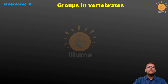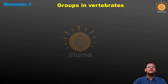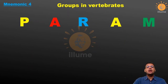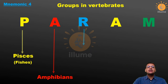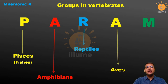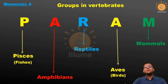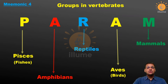The next mnemonic helps remember the groups within Vertebrata. In the phylum Chordata, there is a subgroup called Vertebrata, which has five groups. To remember their names, just remember 'PARAM', an Indian name meaning 'super'. P stands for Pisces, the group of fishes. A stands for Amphibians. R stands for Reptiles. A stands for Aves, or birds. M stands for Mammals. We often get confused among the different groups of vertebrates, so just remember PARAM: Pisces, Amphibians, Reptiles, Aves, and Mammals.